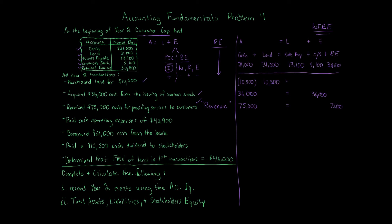Transaction 4: Paid cash operating expenses of $40,900. Cash goes down by $40,900. No effect to Land, Notes Payable, or Common Stock. For Retained Earnings: expenses are going up, and when expenses go up, Retained Earnings goes down. So we have a decrease to Retained Earnings of $40,900. The accounting equation balances. The account label in the side column is Operating Expenses.